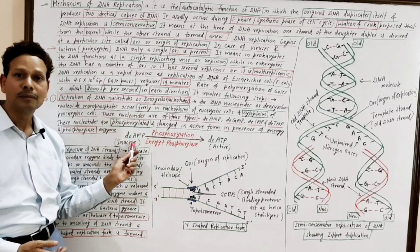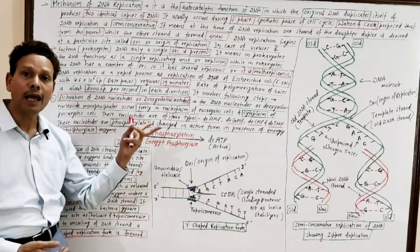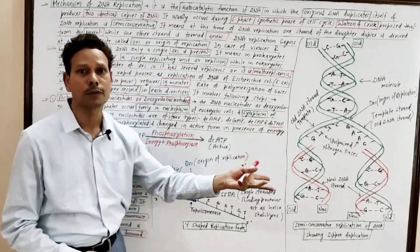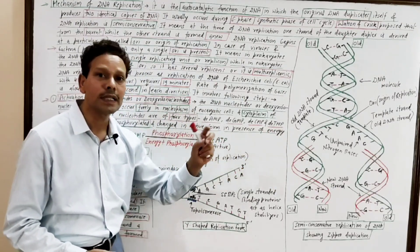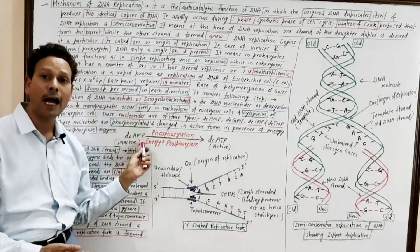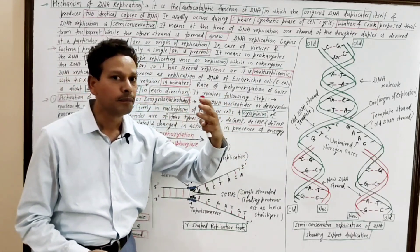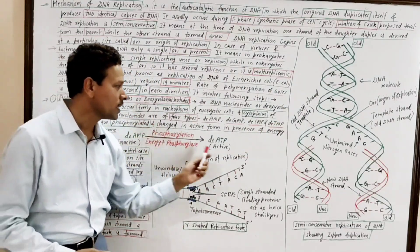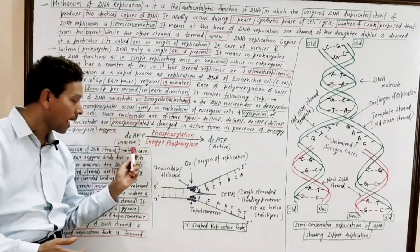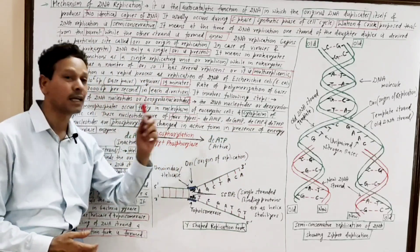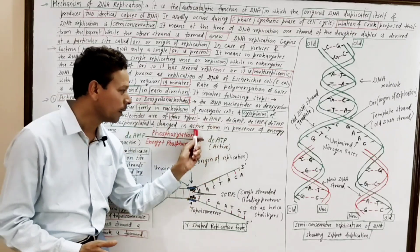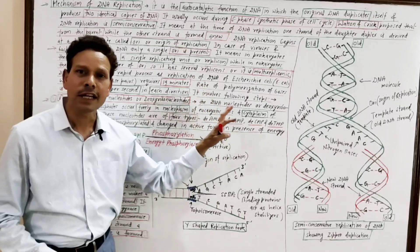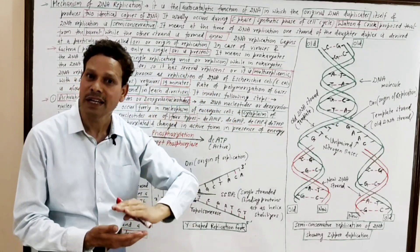As a result, dAMP (monophosphate) is converted into dATP (deoxyadenosine triphosphate). The inactive monophosphate form gains two phosphate groups and becomes a triphosphate, activated in the presence of energy and phosphorylase enzyme. This completes the first step of DNA replication.